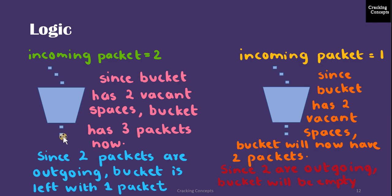Now going for the fourth input which is packet 2. We know that the bucket already has 1 packet and 2 vacant spaces. Incoming is 2, so it correctly fits in the bucket. Bucket has 3 packets now. Since the outgoing rate is 2, we subtract 2 from 3 which is left with 1. So bucket has 1 packet.